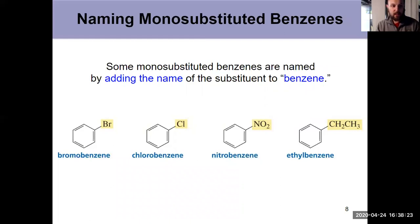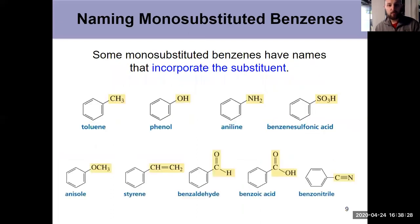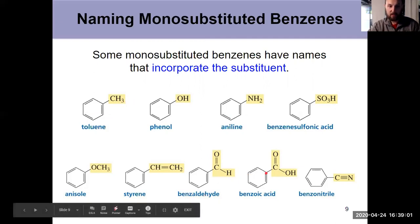But some of the names for these benzene compounds include the substituent with it. And these you do need to know on this slide. These monosubstituted benzenes that have special names that incorporate the substituent. We've seen benzaldehyde, benzoic acid. I've introduced phenol and toluene before. And you should know those four plus aniline without a doubt, and be familiar with the others: benzonitrile, benzenesulfonic acid, styrene, and anisole. You'll see them on your sapling without a doubt. Know toluene, phenol, aniline, benzaldehyde, benzoic acid.